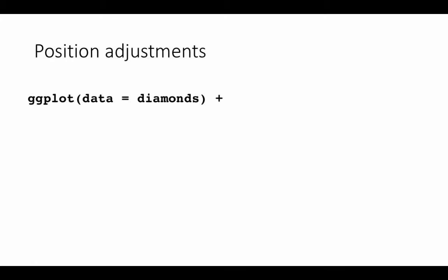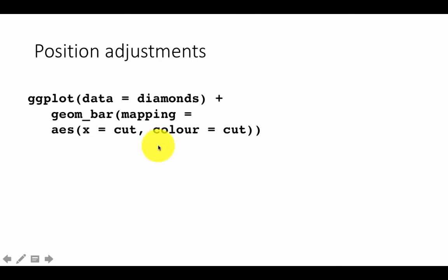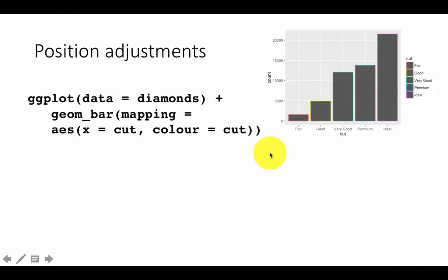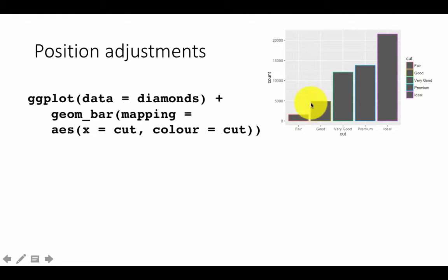There's another important topic in ggplot called position adjustments. Let's look at a plot to motivate the topic. We are using the diamonds dataset with geom_bar where x equals cut and color equals cut. Earlier we only said x equals cut and we got the counts, but now we are saying base the color of each bar on the variable cut. Color has had an impact — it determines the color of only the outline of the bar, so if you look closely the outline of each bar has a different color based on the cut.